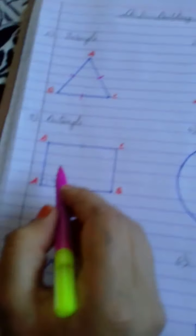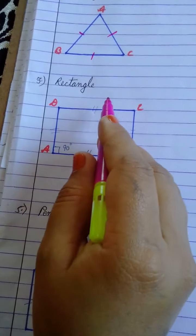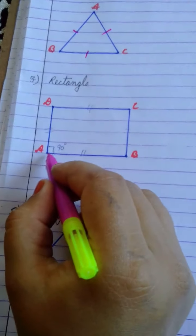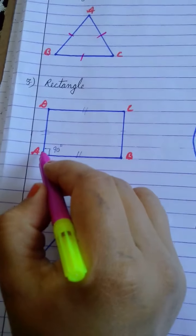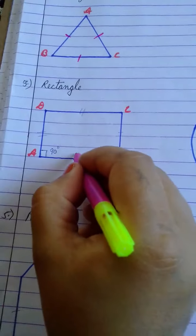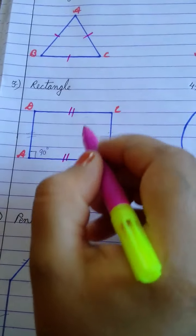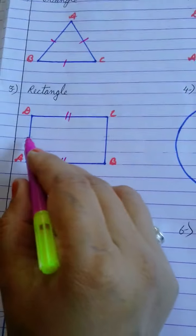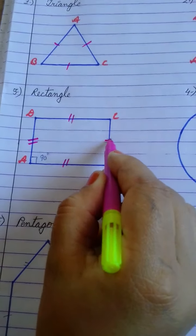Next is our rectangle. What is a rectangle children? It is a closed figure having four sides in such a way that its opposite sides are equal. That means A, B is equal to D, C and A, D is equal to B, C.